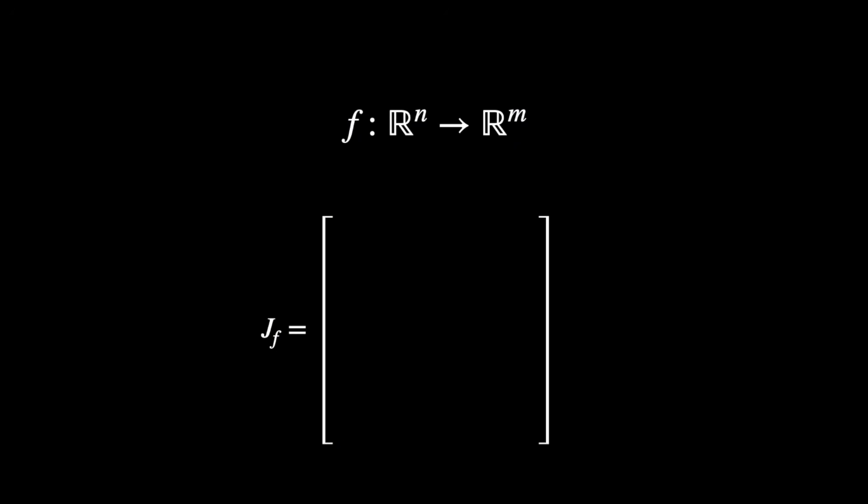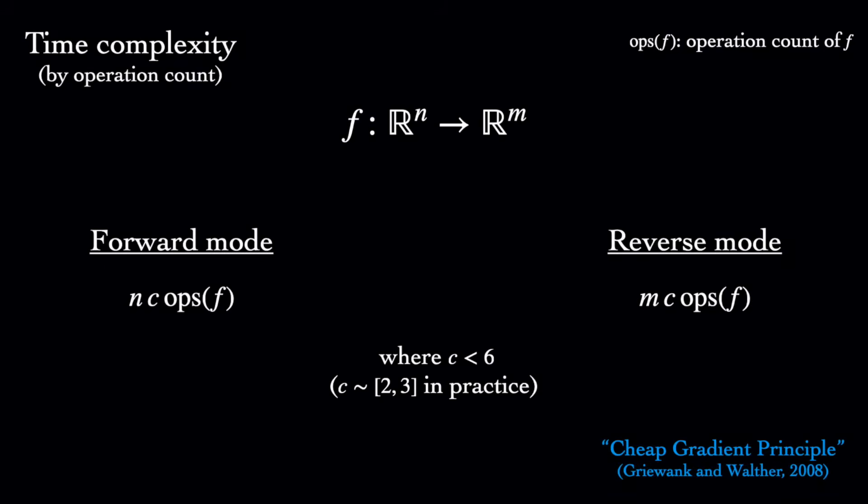For general vector-valued functions, reverse-mode produces one row of the Jacobian at a time, making it ideal when we have few outputs relative to inputs. Now, for both forward and reverse-mode, what's especially neat is that a single pass does not take much longer than evaluating the function itself. In fact, computing a single column of the Jacobian in forward-mode or a single row in reverse-mode is guaranteed to take less than six times the number of operations in the original function implementation. In practice, it tends to only be about two or three times.